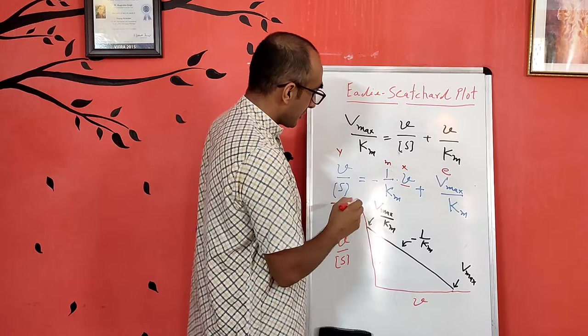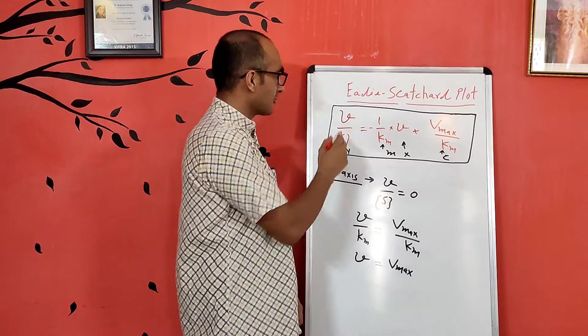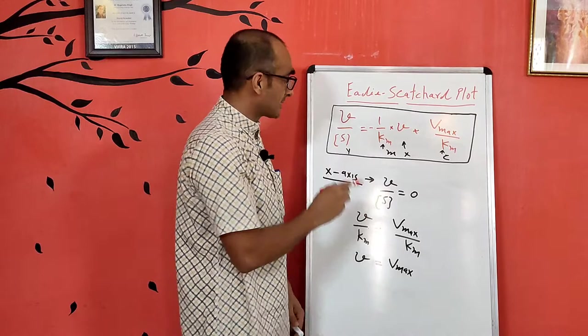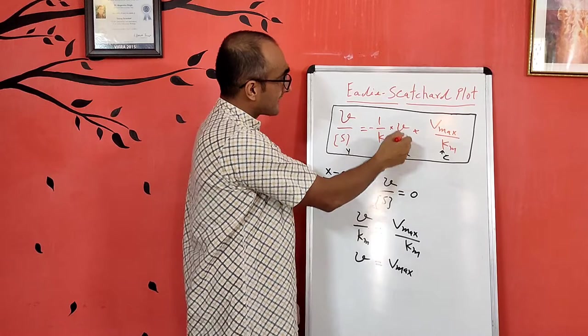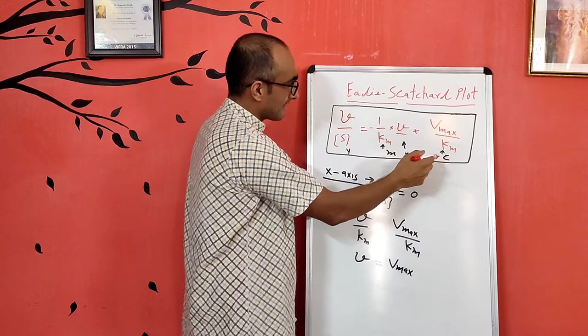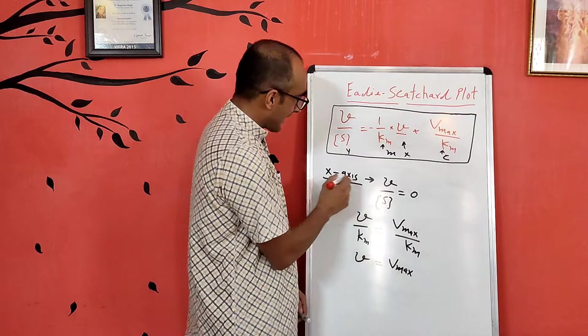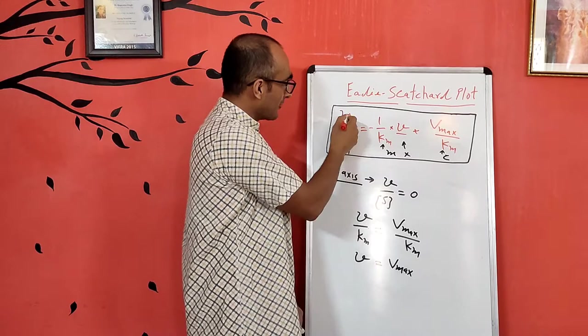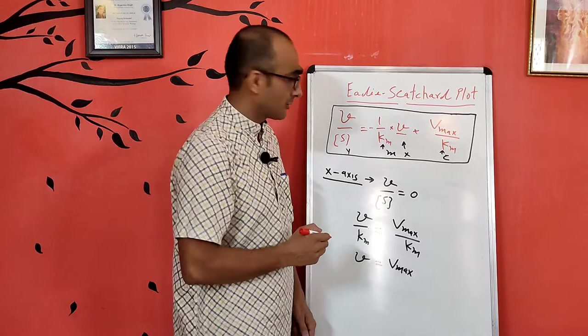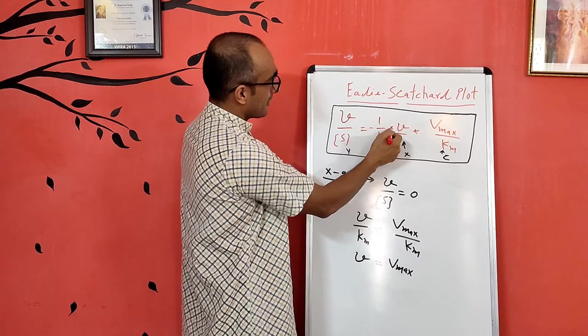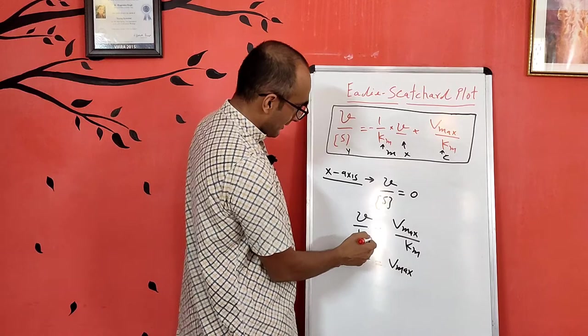To find the x-axis intercept using the Eadie-Scatchard equation v/S = (−1/Km)·v + Vmax/Km: at the x-axis intercept, the value of v/S is 0. Substituting v/S = 0 into the equation, v/Km = Vmax/Km, which simplifies to v = Vmax. Therefore, the x-axis intercept gives the value of Vmax.